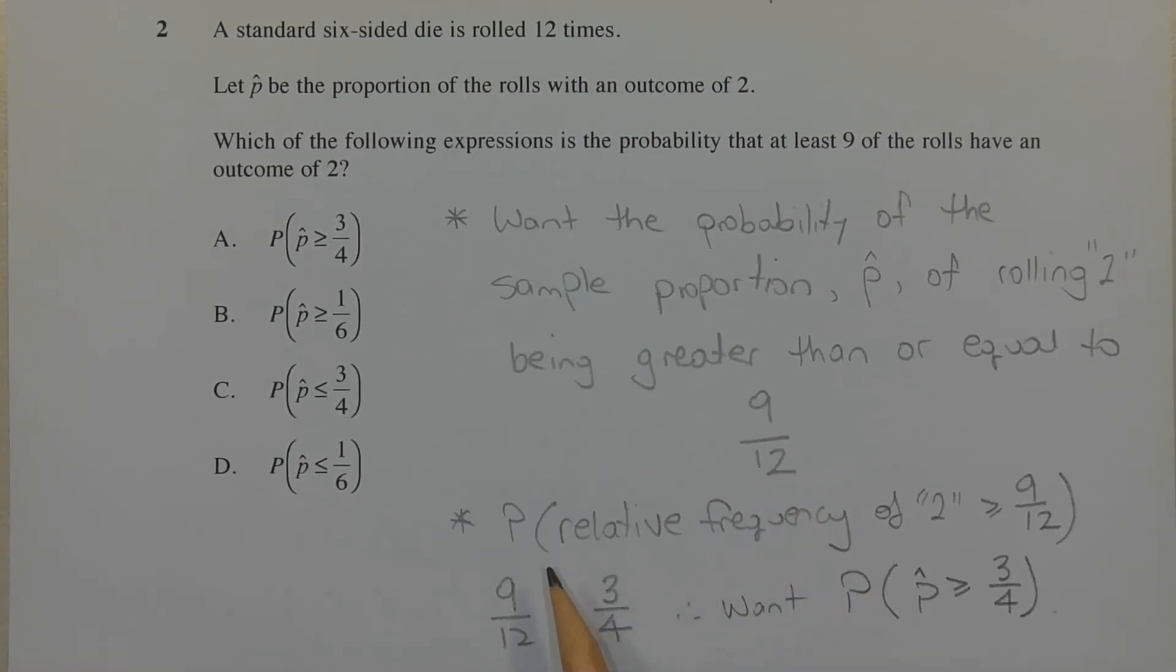Another way to think of it is that P hat represents a relative frequency. So in other words, the probability of the relative frequency of rolling a 2 to be greater than or equal to 9 out of 12.